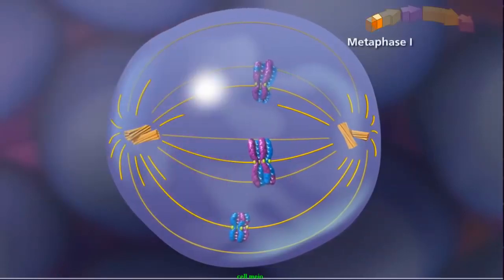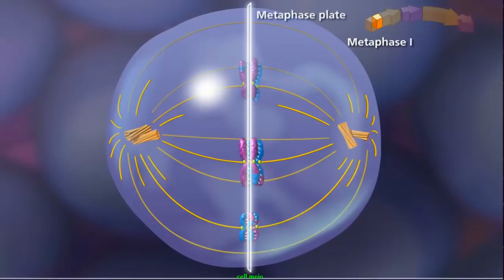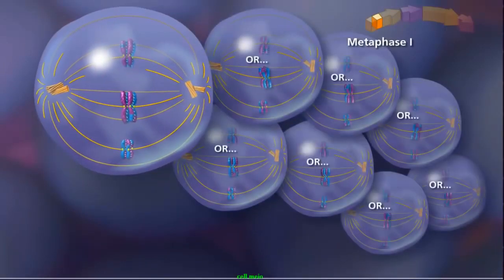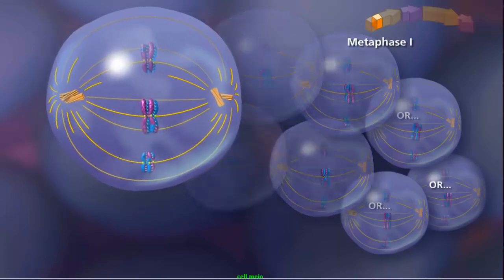During metaphase I, bivalents randomly align along the metaphase plate. Due to independent assortment, this alignment is random and adds to genetic diversity.